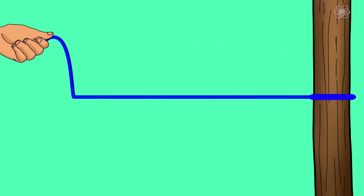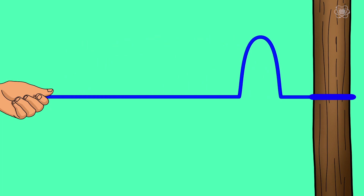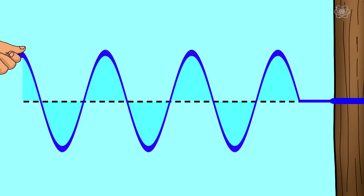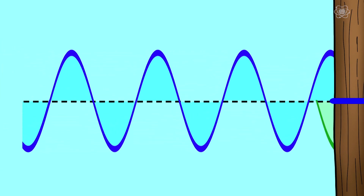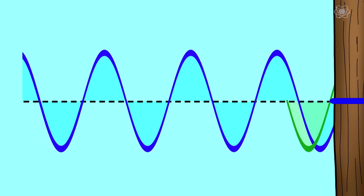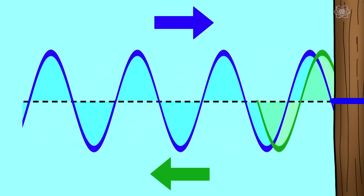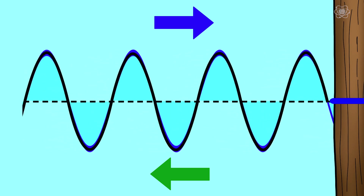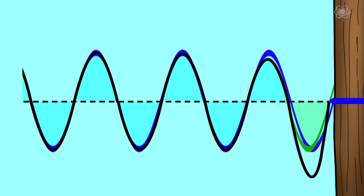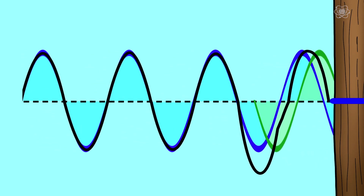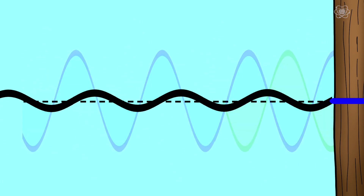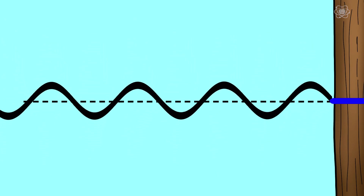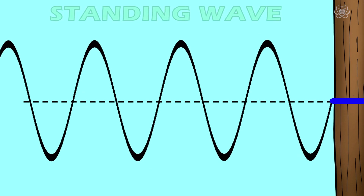Now, if we tie the end of this string to a fixed post, when our wave reaches the end, it reflects back towards its source. If we send a continuous wave down the string, a continuous wave would reflect back. This would result in two waves moving in opposite directions in the same medium. As these two waves interfere with each other, the total disturbance is just the sum of the waves. When they're on top of each other, they add to each other, but when they're on opposite sides, they subtract from each other. And if we line up the frequency just right, we can make the interaction of these two waves cancel each other out, creating a wave that does not look like it's moving at all. This is a standing wave.